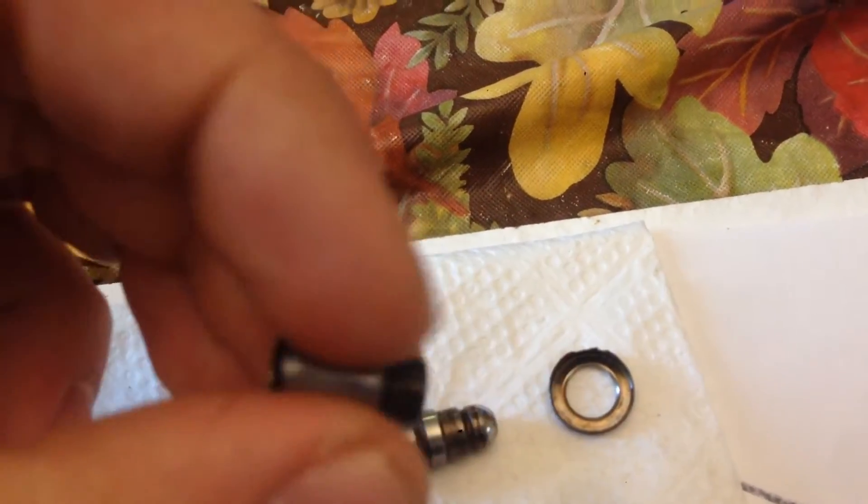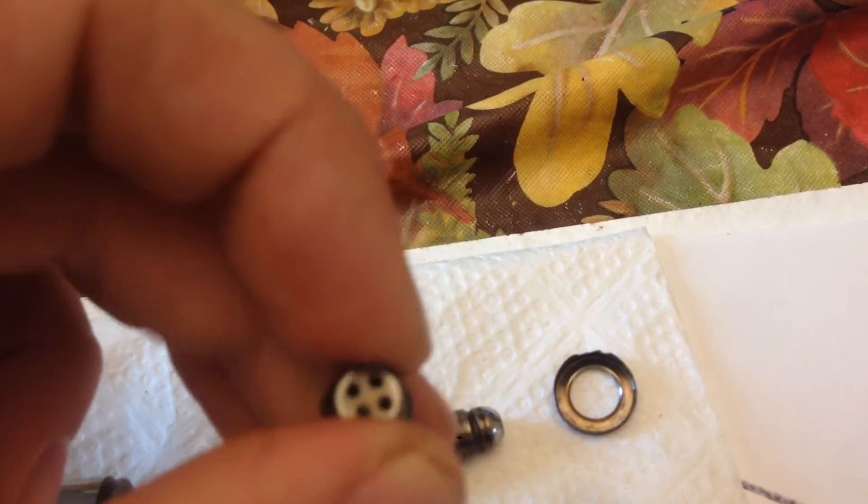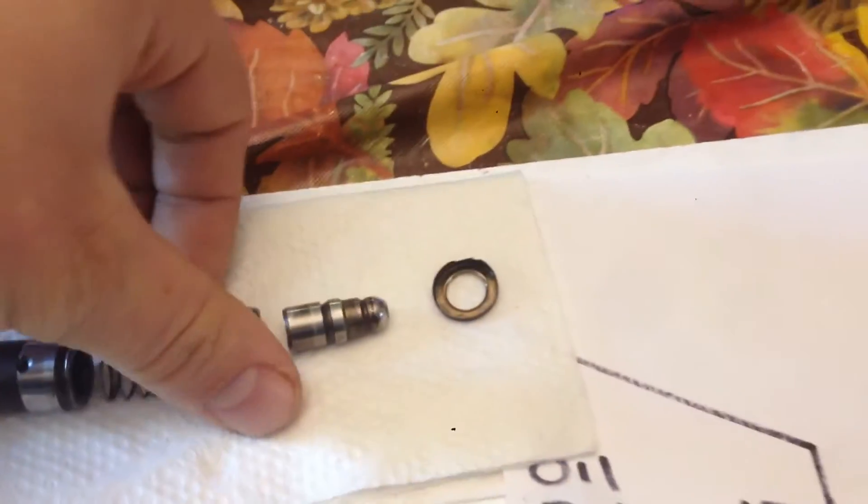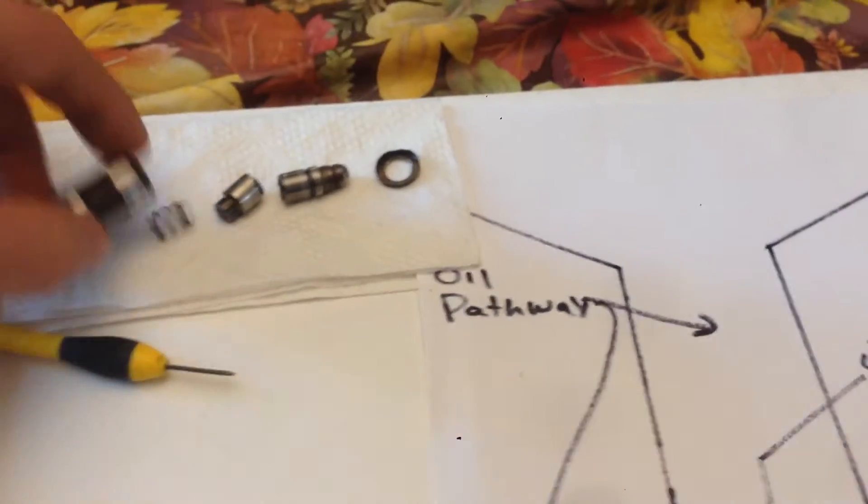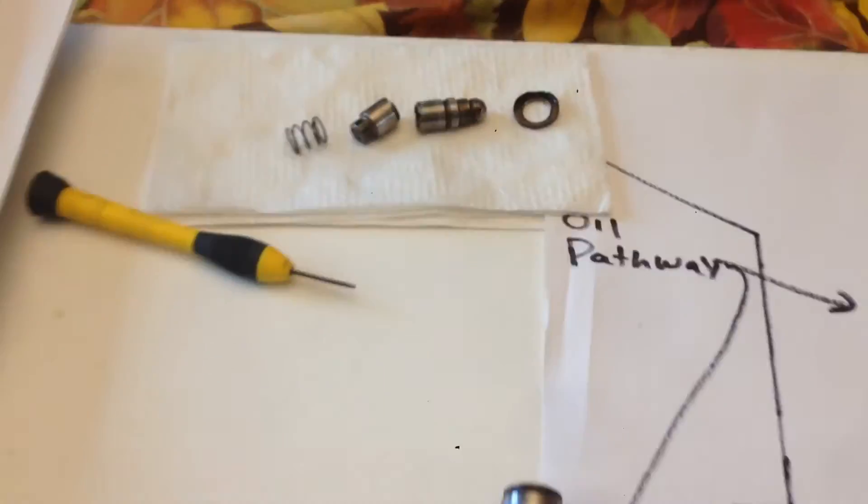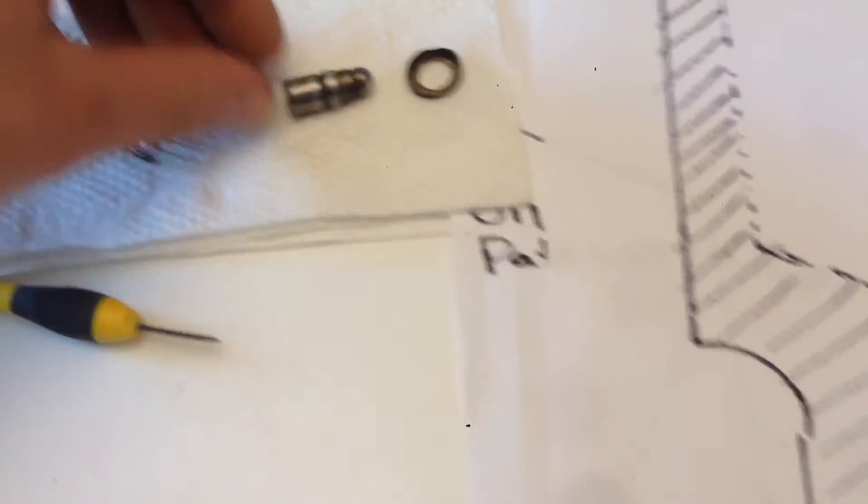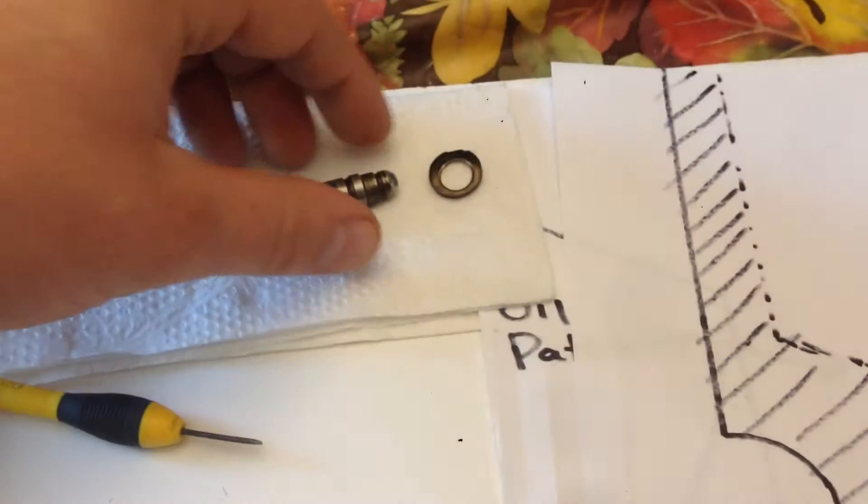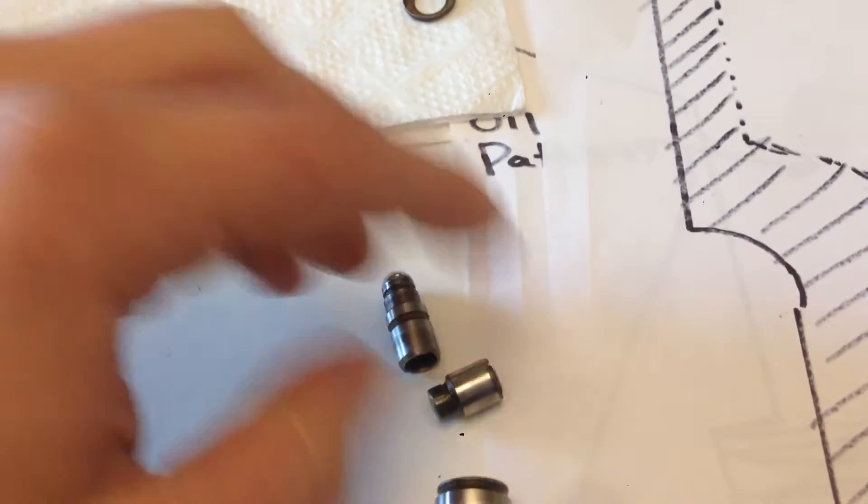It's got a ball and a spring in there as well. If you can imagine this lash adjuster facing upwards in the engine, you've got the top piece here—the top piston.